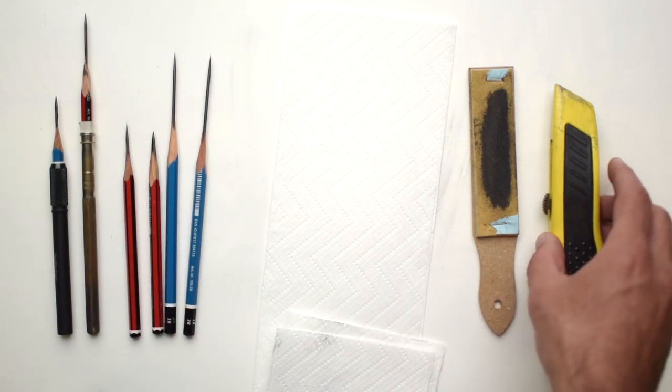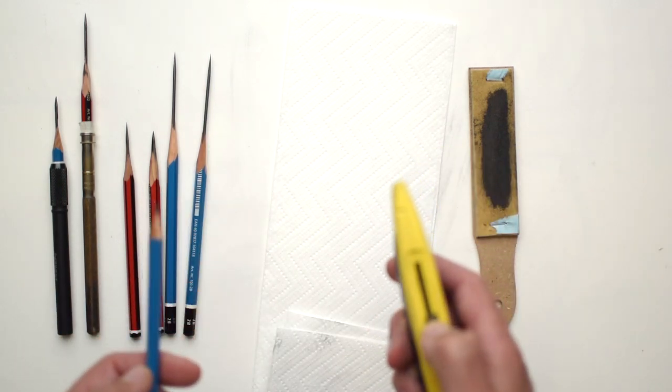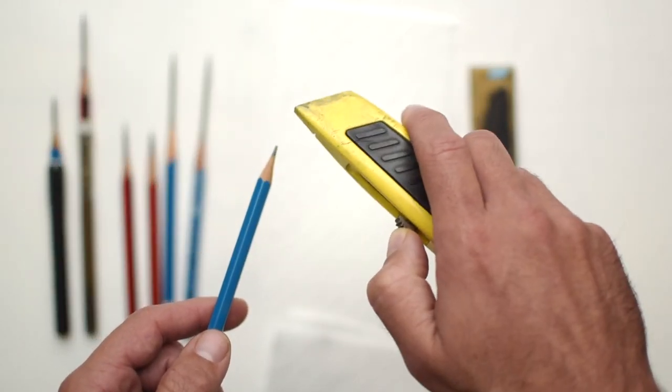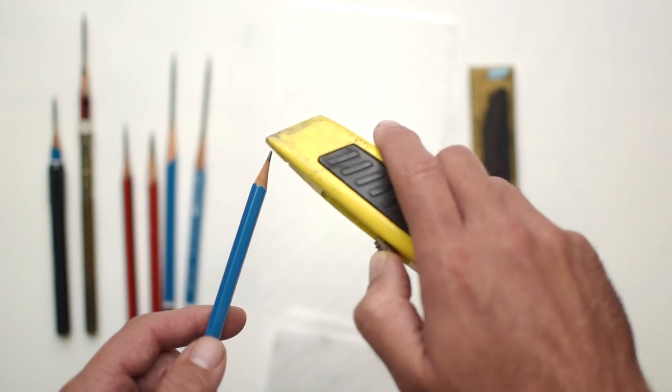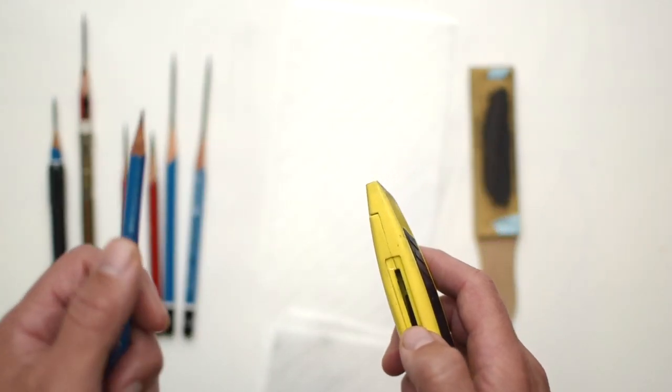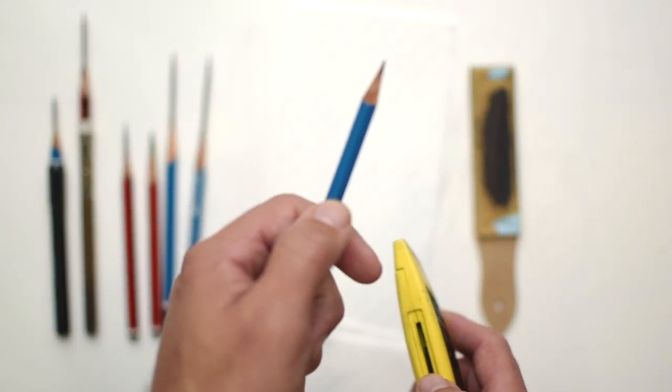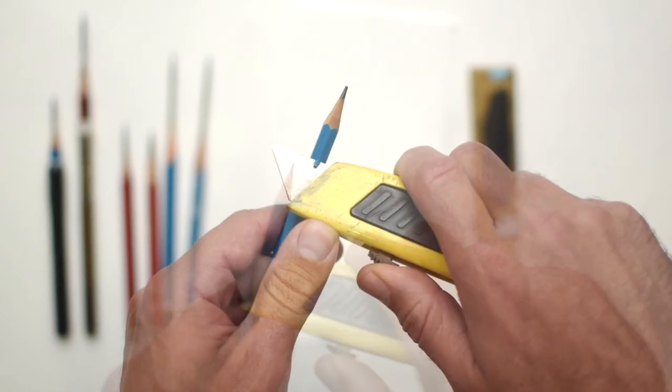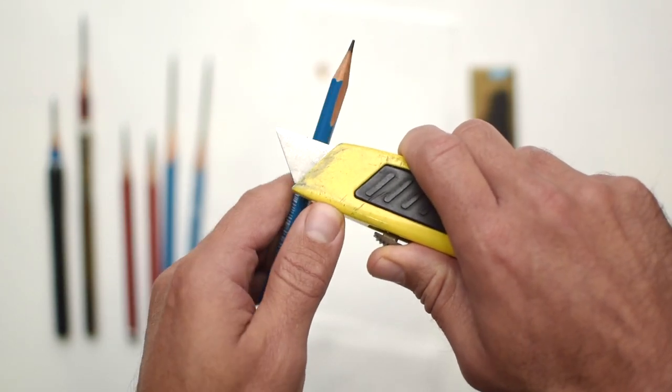To get started, you want to take your pencil in one hand and your knife in the other. And you want to take care to not whittle the wood away from this pencil like you might on a stick. That will break it. The hand that's holding the pencil is pushing the knife and doing all the work. The hand that's holding the knife is just holding the knife.